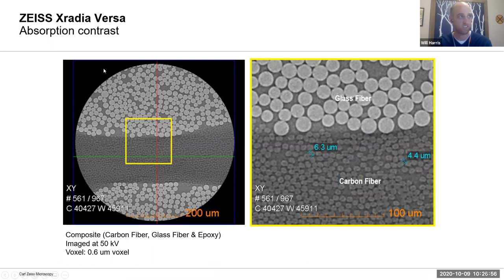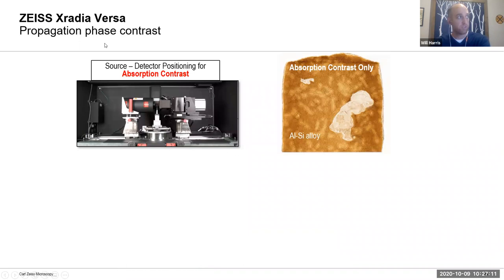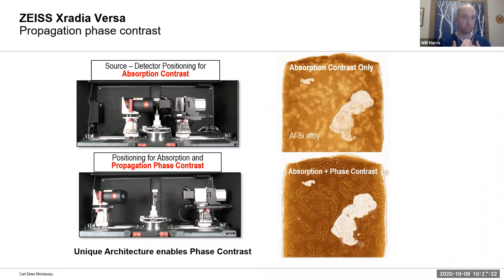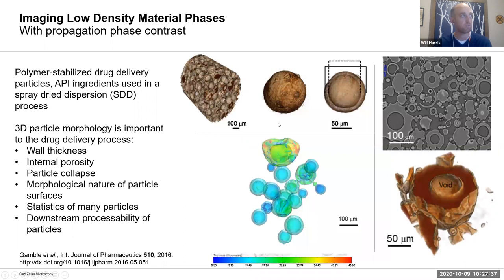Absorption is exactly what it sounds like — an attenuation-based contrast mechanism that works on the average atomic number of the individual phase, so we can differentiate things like different types of fibers in a composite material. Phase contrast is a way of leveraging differences in propagation speed of the x-rays — no longer their attenuation, but the other component of the refractive index, which is a relative phase shift through different regions of material.